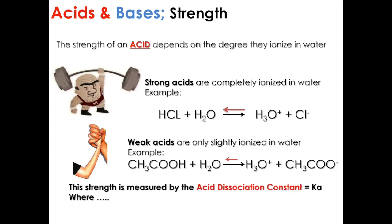This strength is measured by the acid dissociation constant, equal to Ka. This constant is calculated by the multiplication of the concentration of the products in equilibrium, divided by the concentration of the acid in equilibrium.